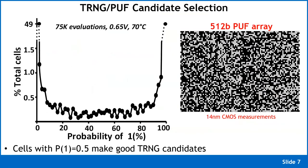The question is: how do we identify which cells are potentially good TRNG cells? We built a 512-bit PUF array and read it out 75,000 times over 75,000 clock cycles. This curve shows what percentage of cells have a probability of producing a zero — close to 49% — and what percentage produce a one — also around 49%.